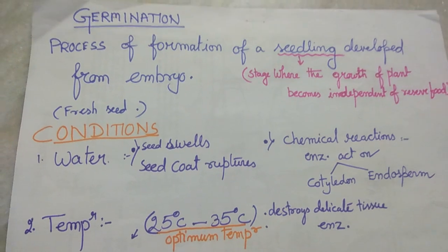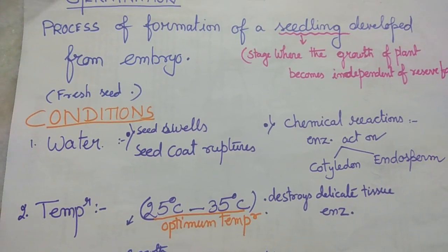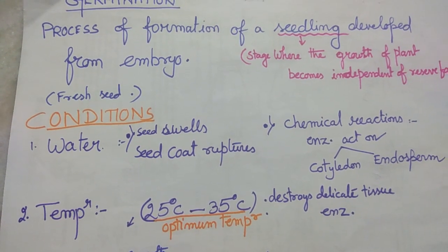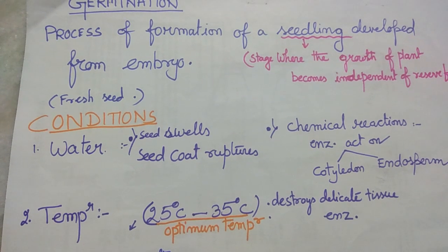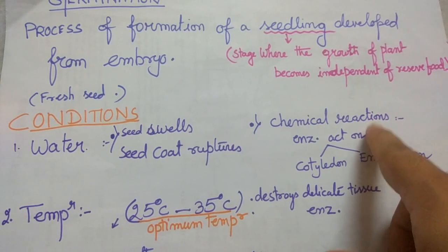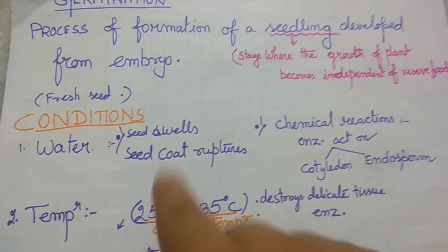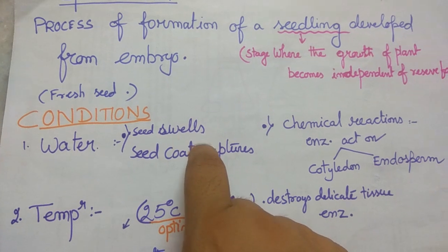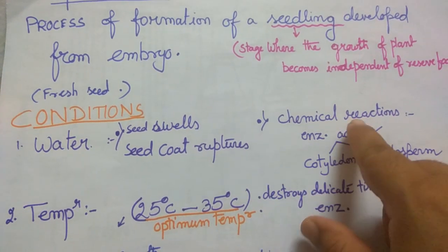The first condition required for germination is water. After getting water, the seed swells because the nutrients and enzymes present inside the seed get water, swell, and start dissolving. The reserved food material dissolves and the enzymes become active. Two things happen when water enters the seed: the seed swells and the seed coat ruptures. After the seed coat ruptures, chemical reactions will start.